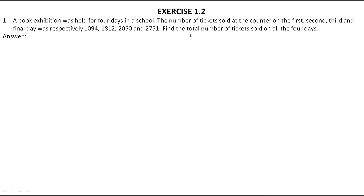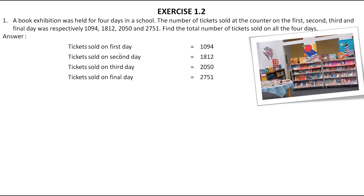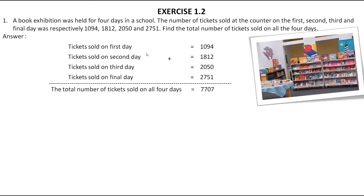They have asked us to find out the total number. For this, we have to add up. Tickets sold on the first day is 1094, on the second day is 1812, on the third day is 2050, and on the final day is 2751. So we add them up and the total number of tickets sold on all four days is 7707. This is the final answer of this question.